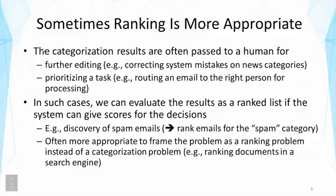For example, discovery of spam emails can be evaluated based on ranking emails for the spam category. This is useful if you want people to verify whether something is really spam — the person takes the ranked list and checks one by one. To reflect the utility for humans in such a task, it's better to evaluate ranking accuracy. Often the problem can be better formulated as a ranking problem instead of a categorization problem. For example, ranking documents in a search engine can also be framed as a binary categorization problem, but typically we frame it as a ranking problem because people examine results sequentially.